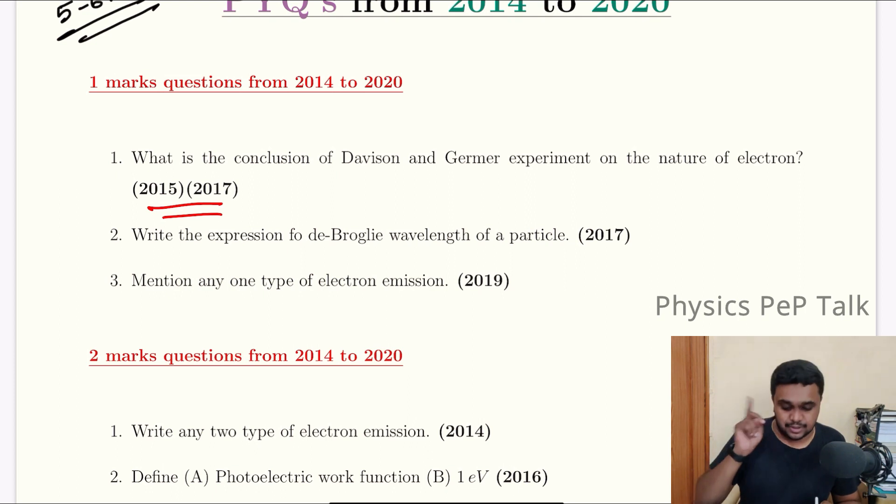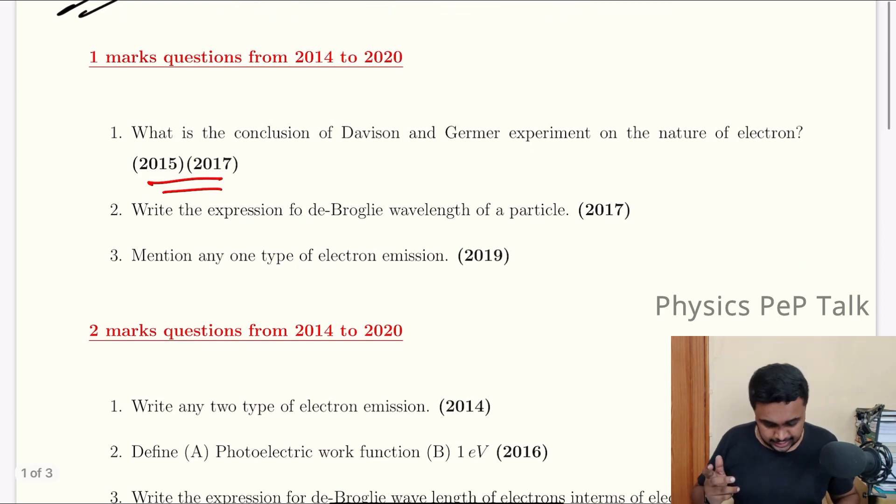This is a repetitive question. What is the conclusion of Davidson and Germer experiment on the nature of electron? That is the outcome of their experiment. Write the expression for de Broglie wavelength of particle.